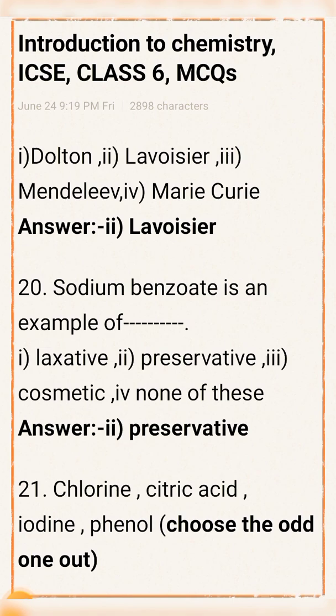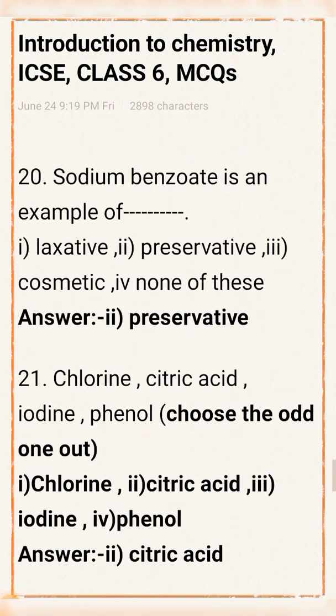Question number 21: Chlorine, citric acid, iodine, phenol — choose the odd one out. Answer: Option 2, citric acid, is the odd one out. The others are disinfectants.